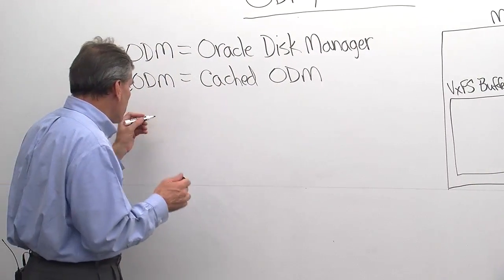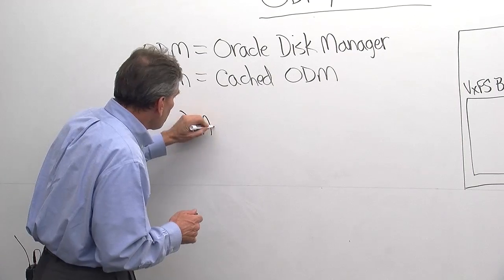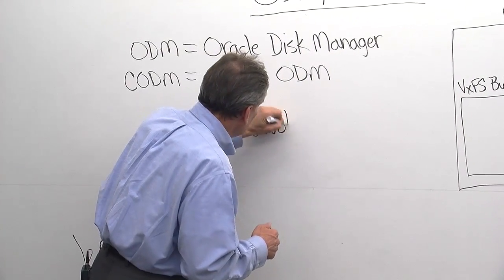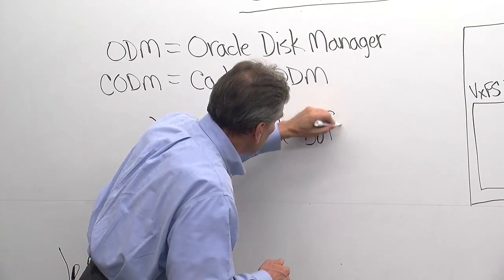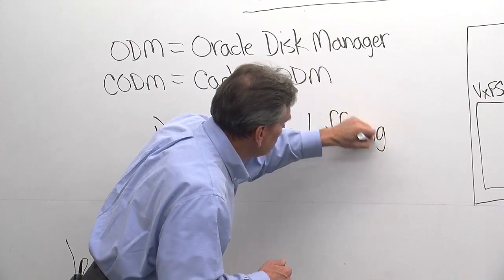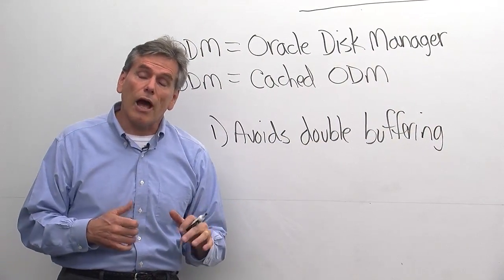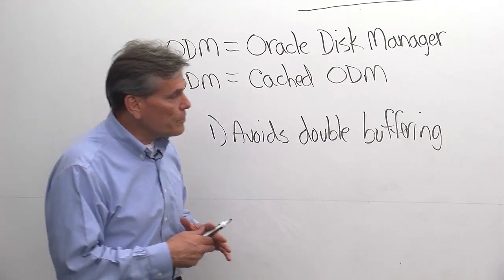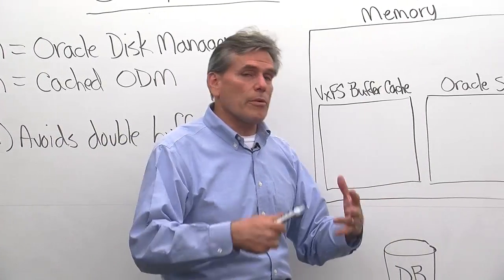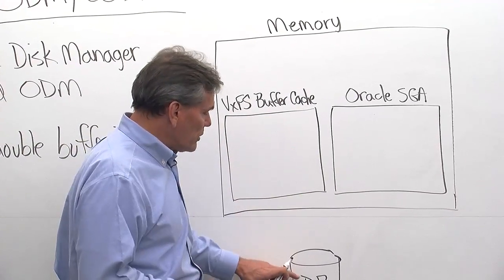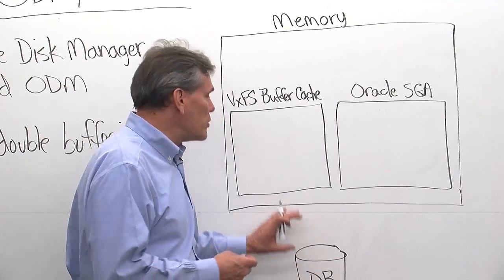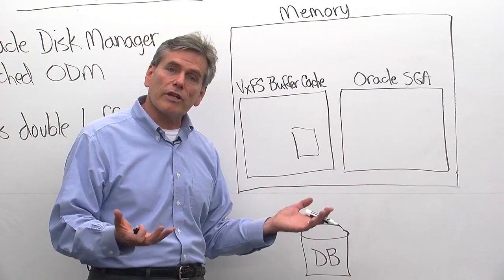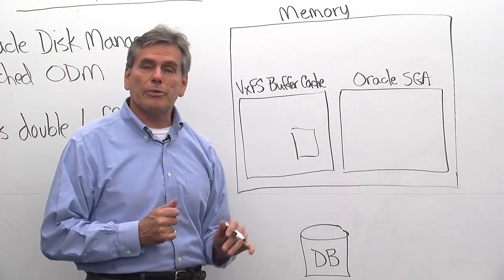There are three key benefits. The first is it avoids double buffering. What double buffering is: if you look at a traditional file, the application requests some amount of I/O, we go out to disk, we pull in those pages, and then we put them in our buffer cache. Then we give it to the application.